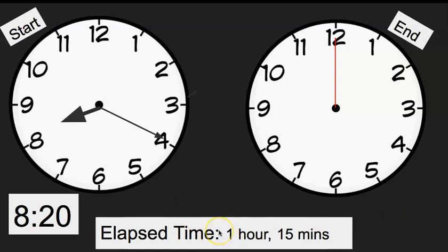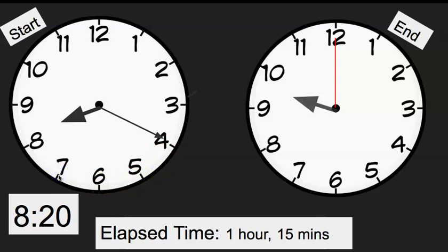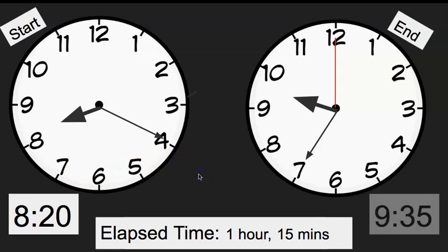Think about what it would be one hour later from 8:20 — yes, 9:20 would be one hour later. But then we need to move 15 more minutes: five, ten, fifteen. So my hour hand is going to be a little bit closer to the 10 because it's moving as my minute hand moves, and my minute hand is going to be pointed at the 7 — which gives us 9:35. Great work.